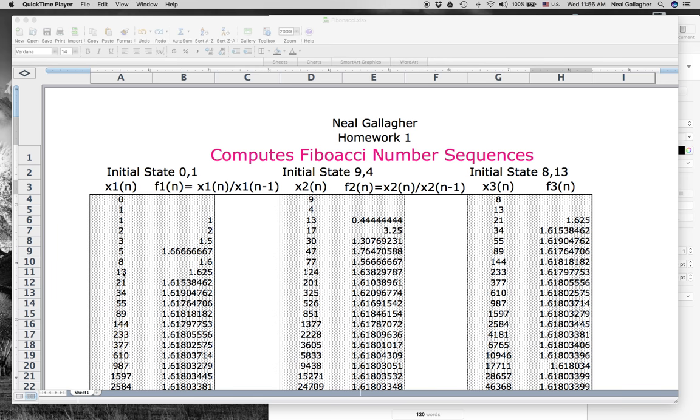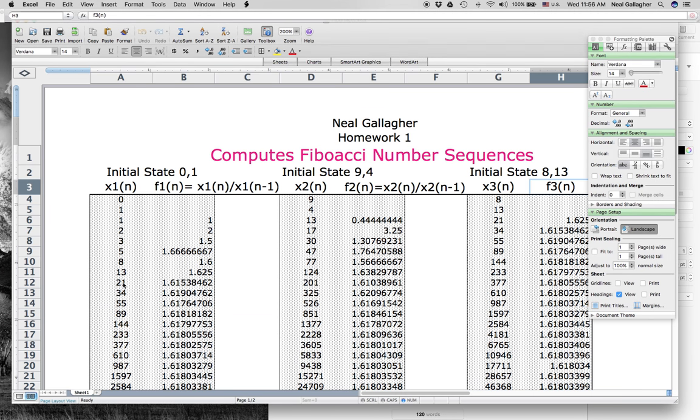For each term in this column, we have it set up such that the value of A12 is generated by summing A10 and A11. So that's the typical Fibonacci sequence.